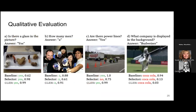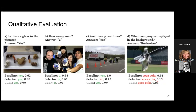Qualitatively, when all three methods provide a correct answer, our method provides that answer with higher confidence. More importantly, when all three methods provide a wrong answer, the baseline gives very high confidence for it, the selector reduces this somewhat (confidence of 0.13), but our method provides an even lower confidence for the wrong answer, specifically addressing overconfidence and poor calibration.